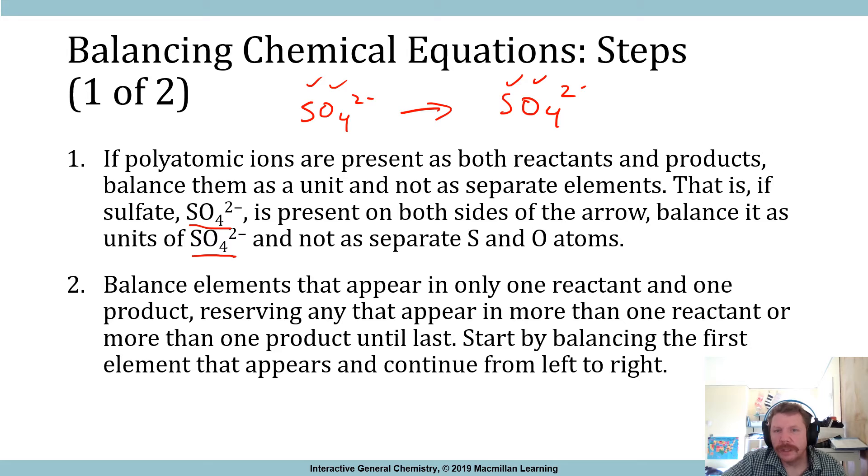Balance the elements that appear in only one reactant and one product, reserving any that appear in more than one reactant or more than one product until last. Start by balancing the first element that appears and continue from left to right. So if you see something like H2O, and let's just say molecule X. Molecule X plus H2O yields, let's just go with O2 plus molecule Y. And in molecule Y, there's no oxygen, and in molecule X, there's no oxygen. Well, oxygen is only in one location, so you only have to worry about balancing, you should balance that oxygen first there. So then if you put a 2 coefficient in front of that, boom, those oxygens are balanced. You'll have to worry about X and Y and those hydrogens, but this is saying if you see something that's only in one spot, balance that.